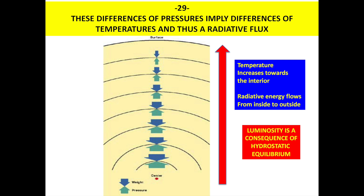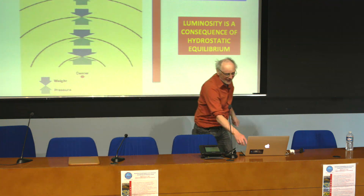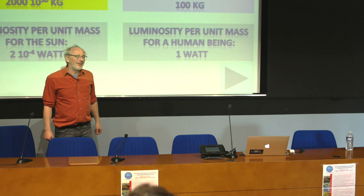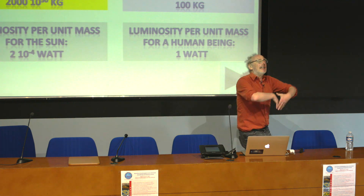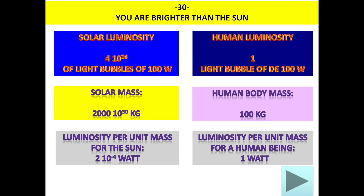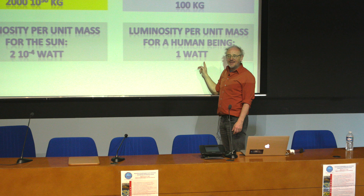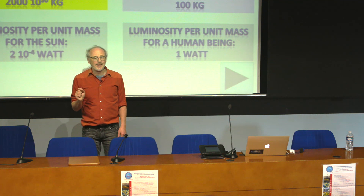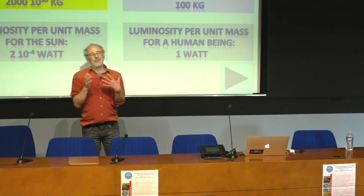It's very funny to ask: are you brighter than the Sun? No, of course. But it depends on the point of view. The Sun emits about 4×10²⁶ watts, with a mass of 2×10³⁰ kg. A human body emits like a 100-watt bulb with a mass of about 100 kg. So per unit mass, you emit 10,000 times more than the Sun. You are a much more powerful, sophisticated object than the Sun.